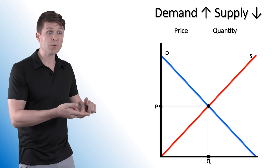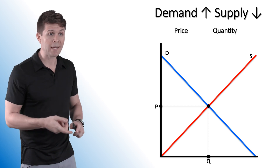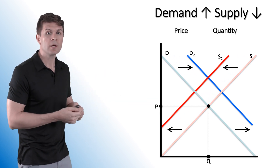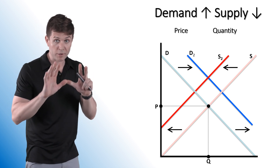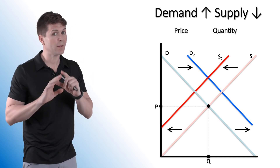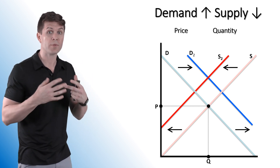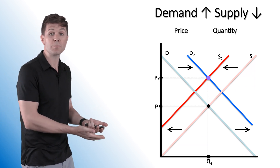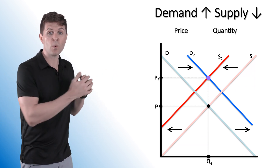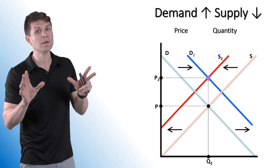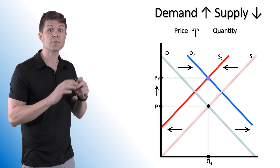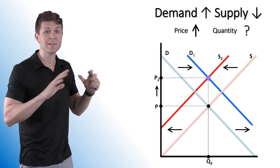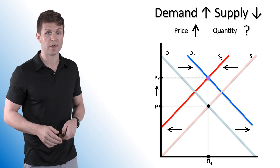Let's take a look at demand increase and supply decrease. We're going to see demand shift to the right and supply shift to the left. We're going to know what happens to price or quantity, but not both with 100% certainty. In this particular example, price has increased, and quantity appears to have stayed the same — but we know this is just indeterminate. So price has gone up and quantity is going to be unknown in this particular example.